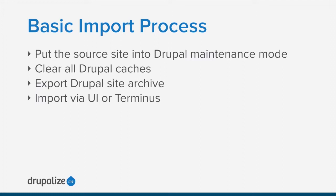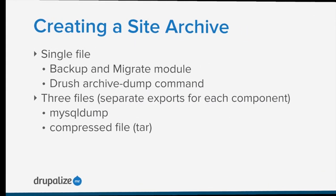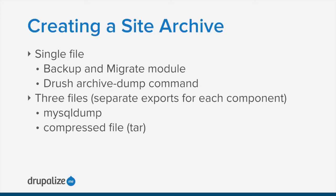The basic import process for sites under 500 megabytes works like a standard backup process. First, put the source site into maintenance mode so changes aren't happening while you create the archive. Then clear all your Drupal caches, since you don't need that data taking up space. Export the Drupal site archive, and then import it via the Pantheon dashboard UI, or using a Pantheon command line tool called Terminus. The key is creating that site archive to start with.